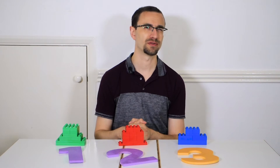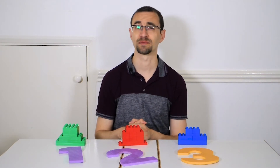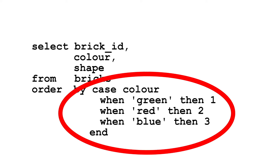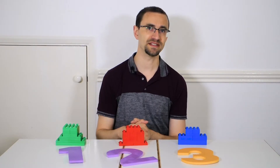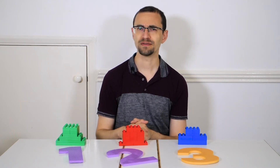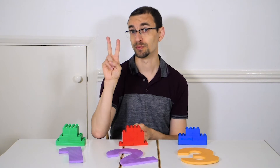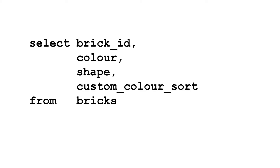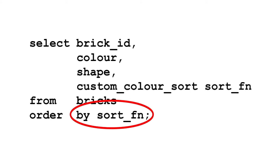This was fairly easy, but if you've got complex sorting logic, it can be tricky to check you've got the mapping correct. To do this, put the function doing the mapping in your SELECT — this makes it easy to see whether rows have the correct value. But now you've got your function in two places, which can lead to maintenance problems. To overcome this, give the function an alias in the SELECT, and you can then use this alias in your ORDER BY so the function is only in one place.